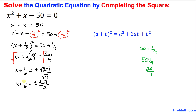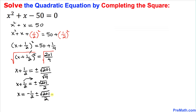Let's move this 1/2 to the right hand side to isolate X. When 1/2 moves to the right hand side it becomes negative 1/2, so we have X = −1/2 ± √201 / 2. Since we have the same common denominator of 2, this can be written as X = (−1 ± √201) / 2.